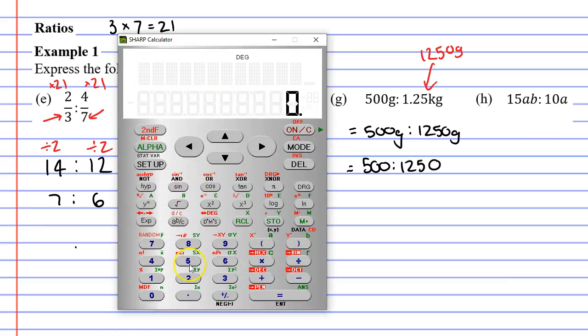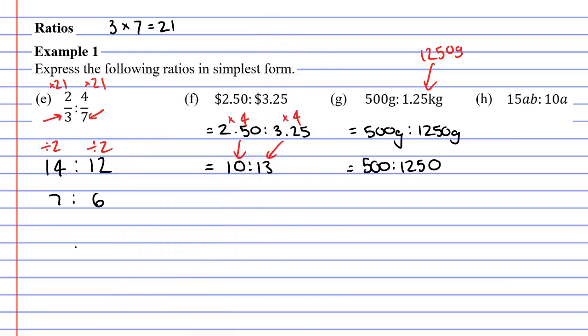Let's just work this out on the calculator. 500 ABC 1,250 equals and we get the ratio 2 to 5.